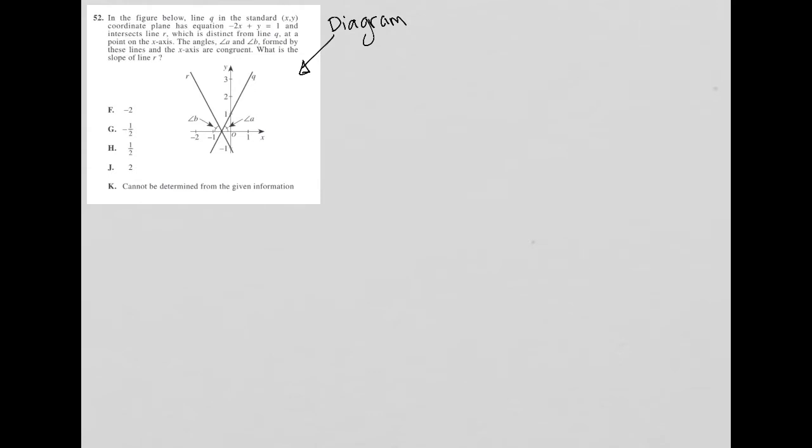So the question says, in the figure below, line Q in the standard XY coordinate plane has equation, and I'm going to write that down because I always write the equations down that are provided: negative 2X plus Y equals 1.